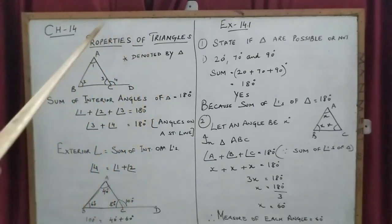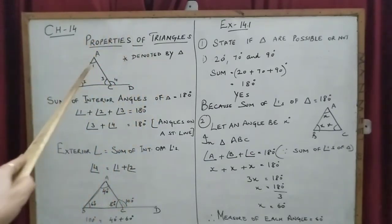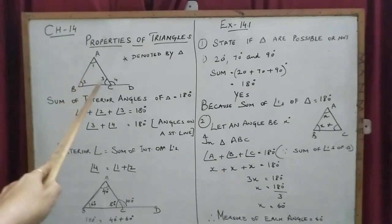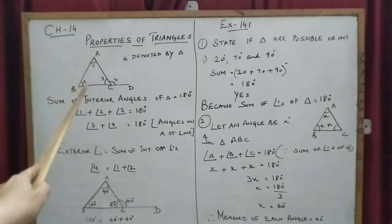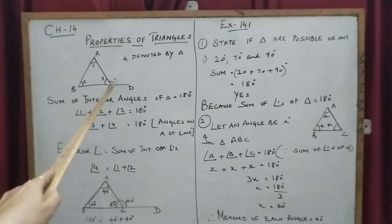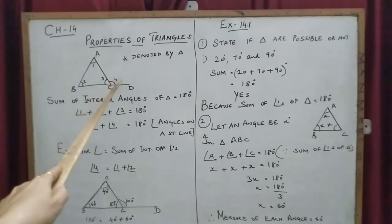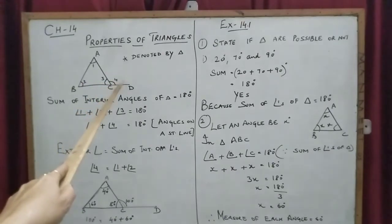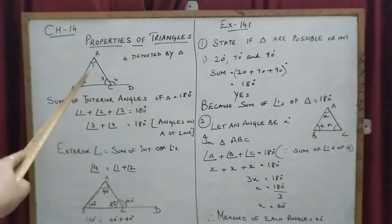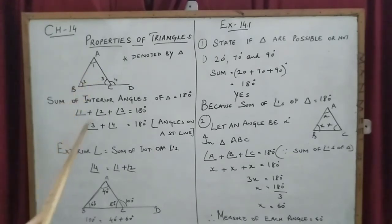There are three angles in a triangle — angle one, angle two, and angle three — these are the interior angles. One angle is outside, known as the exterior angle. The sum of interior angles of a triangle is equal to 180 degrees. So if I add angle one, angle two, and angle three, I get 180 degrees.